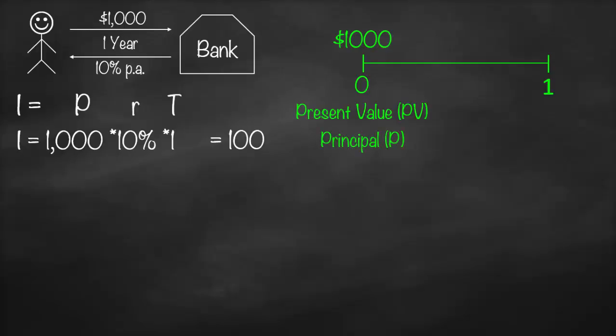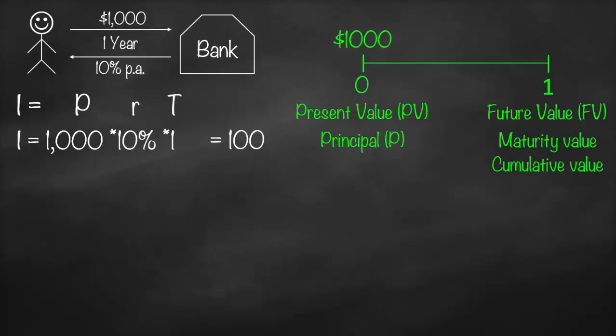What will be the value after one year? This will be the value in the future — it could be after one year, six months, three years, five years, or ten years. Therefore, since this is the value in the future, we can call it future value, which we give the symbol FV. It has many synonyms such as maturity value, cumulative value, compound amount, or face value. All of them refer to the value in the future.